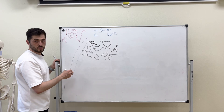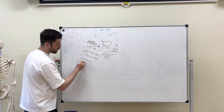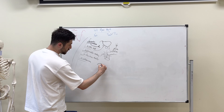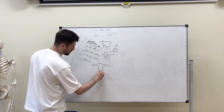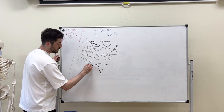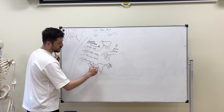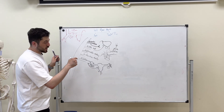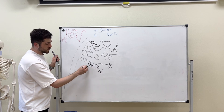The next important branch is arteria uterina. It has three branches: ramus uterinus — to the uterus itself; ramus tubarius — to the uterine tube; and ramus ovaricus — to the ovary. There is anastomosis between the ramus ovaricus of the arteria uterina and the ovarian artery, which comes directly from the abdominal aorta. This ramus ovaricus forms anastomosis between these two structures.